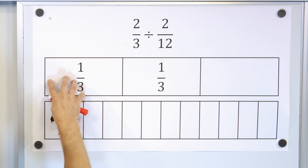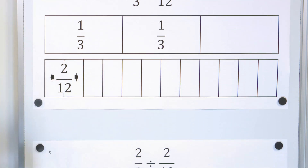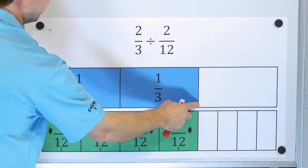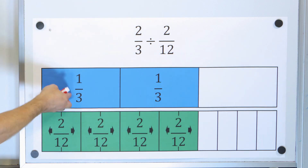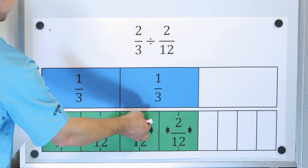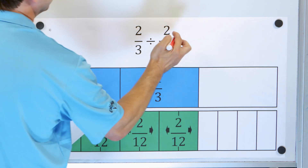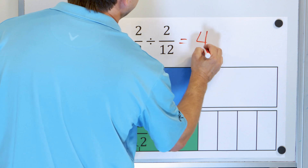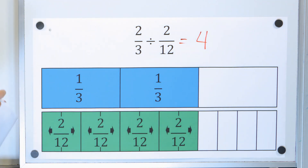So how many times can this fit into everything up above? If we shade two-thirds, the two-twelfths will fit one time, two times, three times, and it will fit four exact times. So we say that it is equal to four — two-thirds divided by two-twelfths goes four whole times.